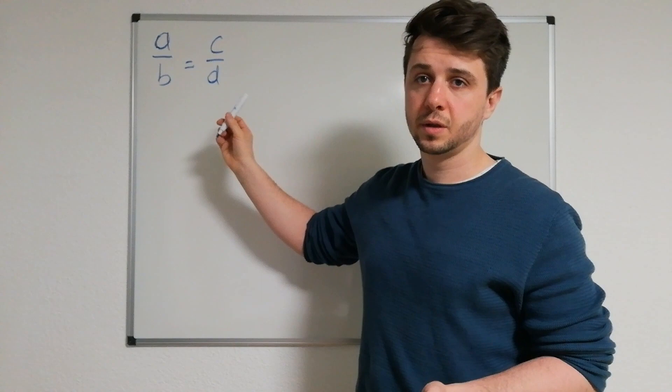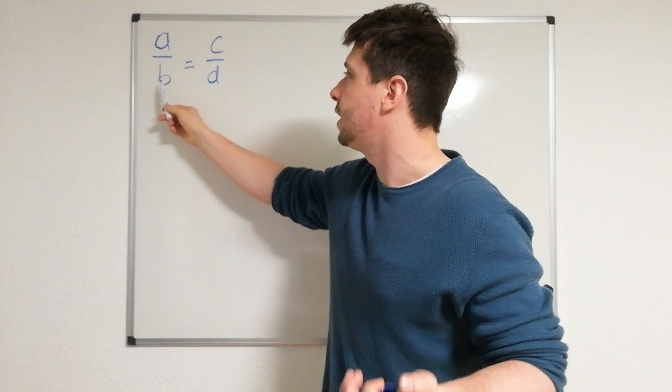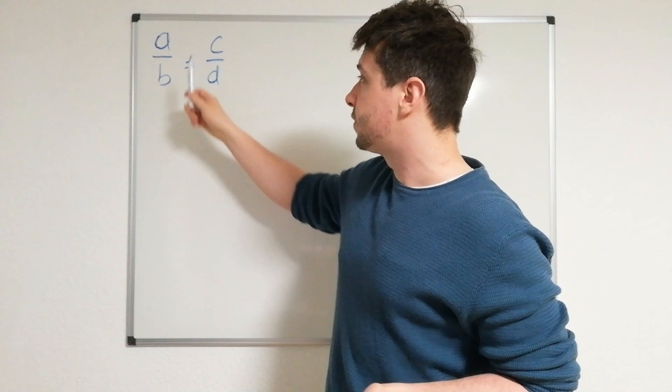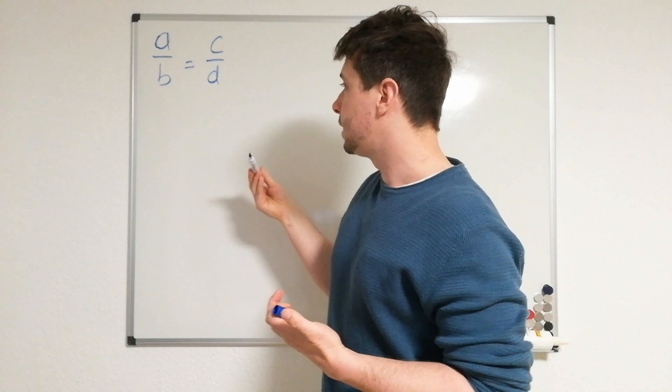It can be 2x plus 5, this can be 15 or 7x plus 7. It really doesn't matter as long as you've got this structure: fraction equals fraction.